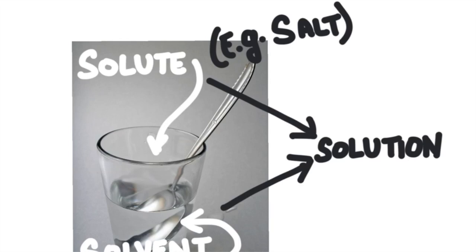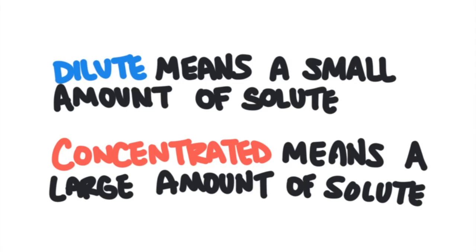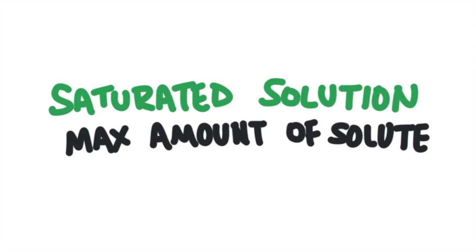Solutions can be concentrated, or they can be dilute. A dilute solution means that there is very little solute that is dissolved in the solvent. Solutions become more concentrated, as more and more solute is dissolved. There is a point at which the solvent cannot hold any more solute. When that point is reached, a saturated solution has been formed. A saturated solution is a solution that has the maximum amount of solute dissolved in the solvent.